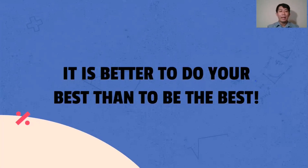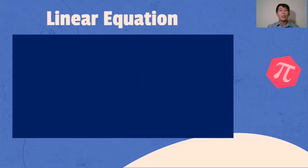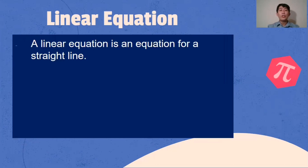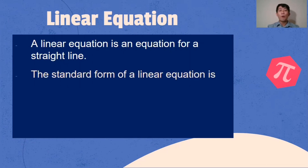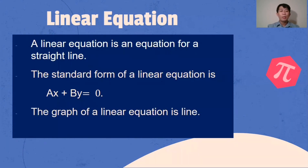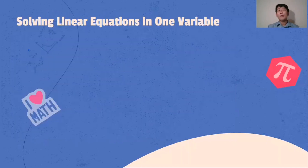Always remember: it is better to do your best than to be the best. What is a linear equation? A linear equation is an equation for a straight line. The standard form of a linear equation is ax + by = 0. The graph of a linear equation is a line.